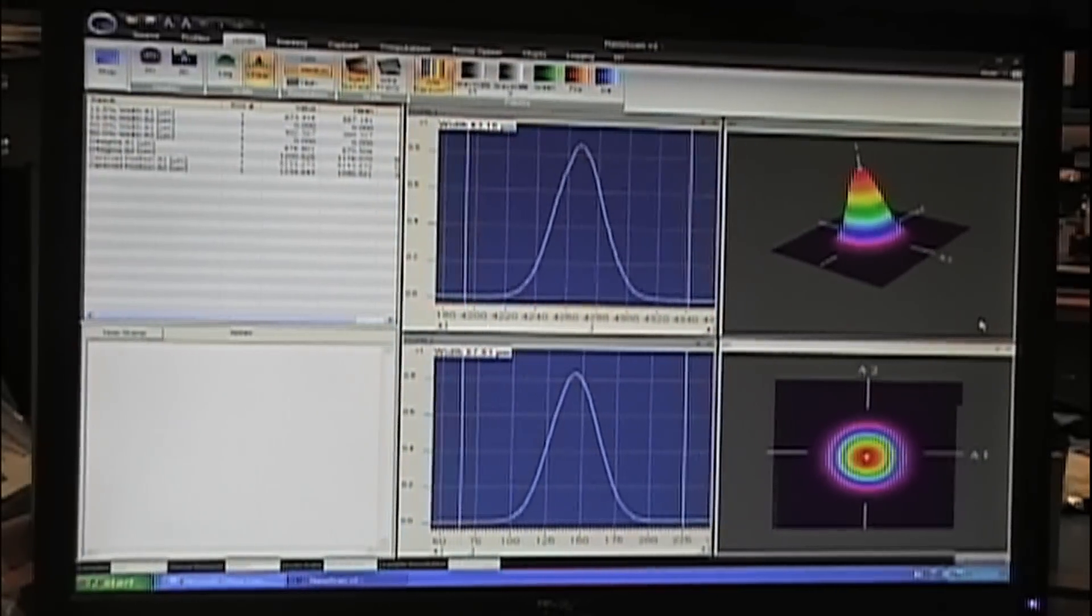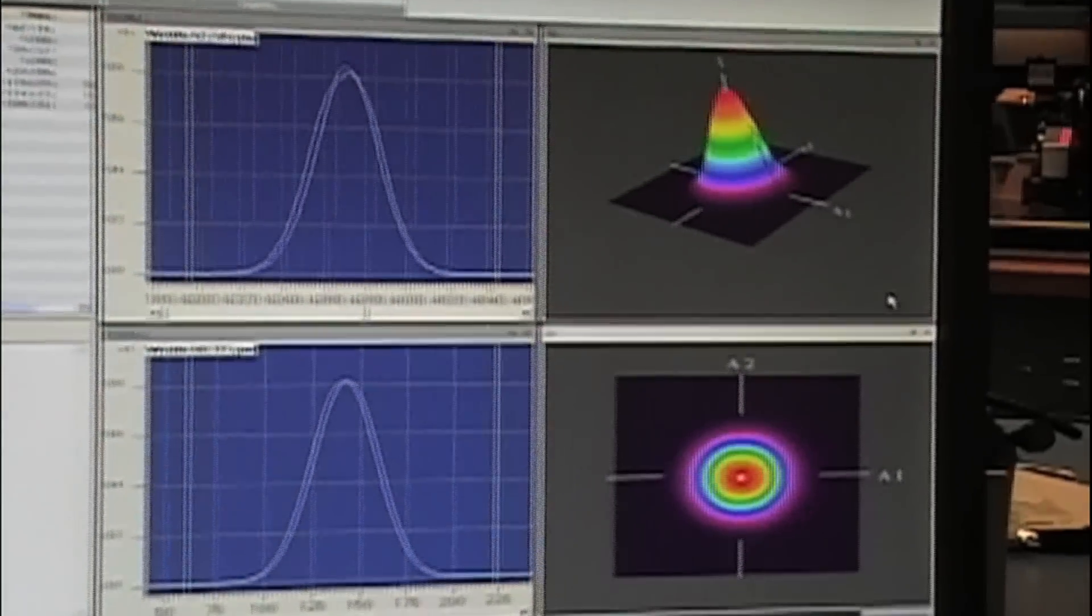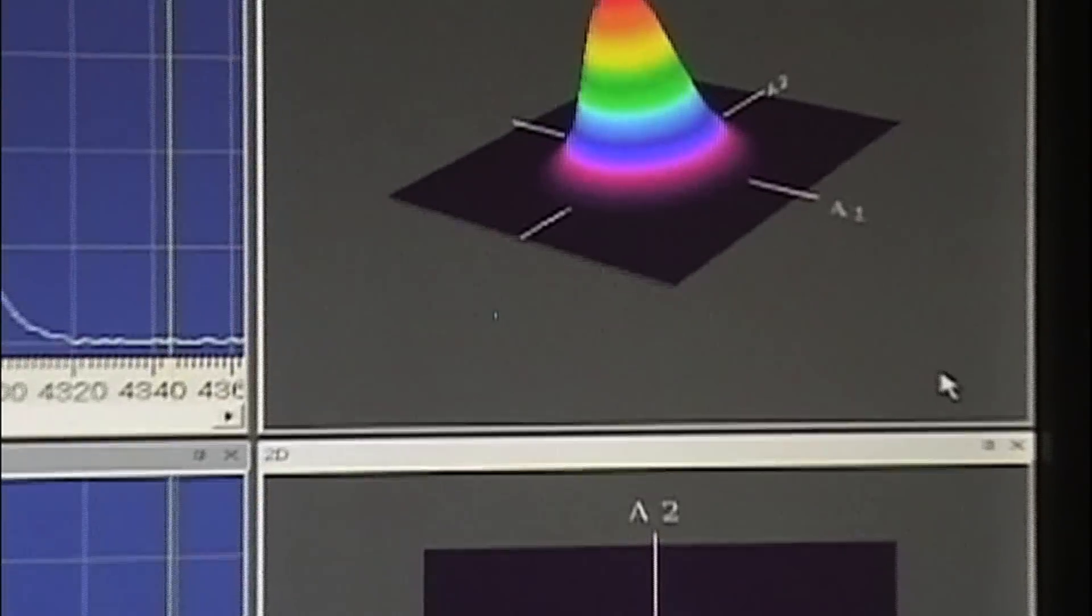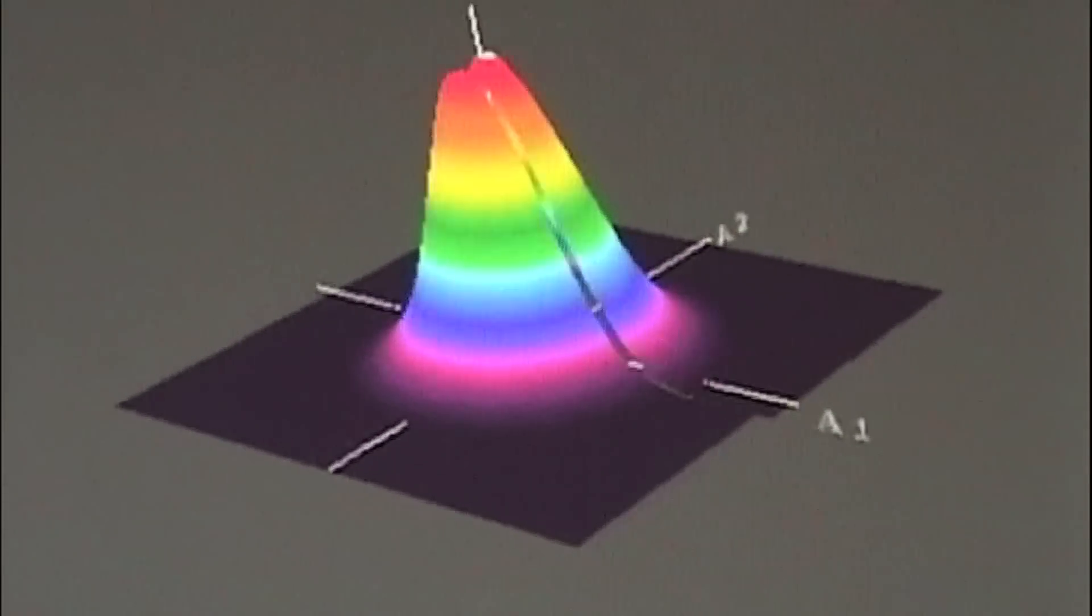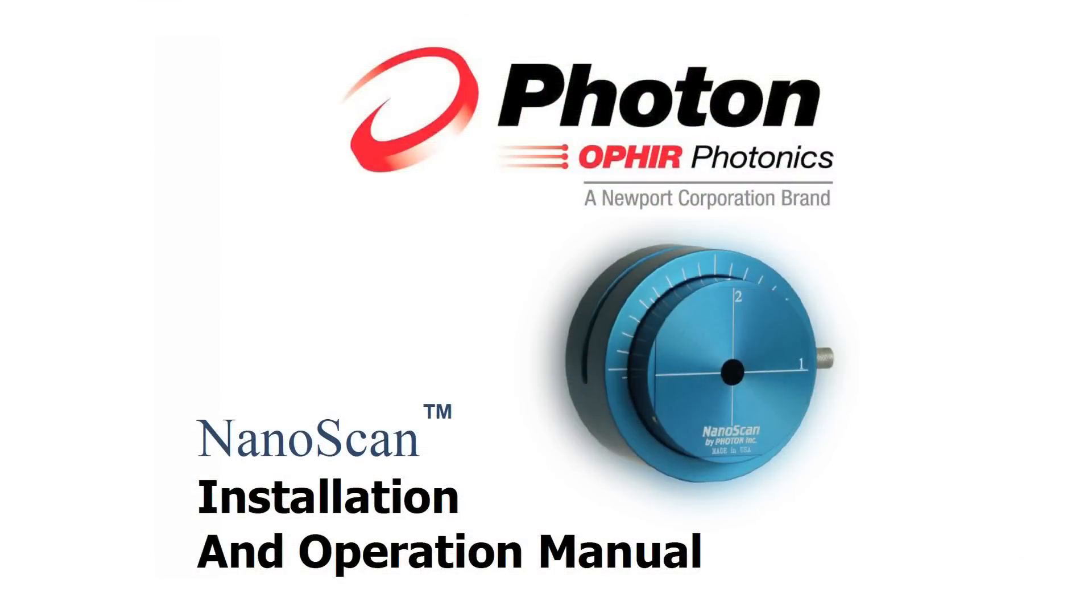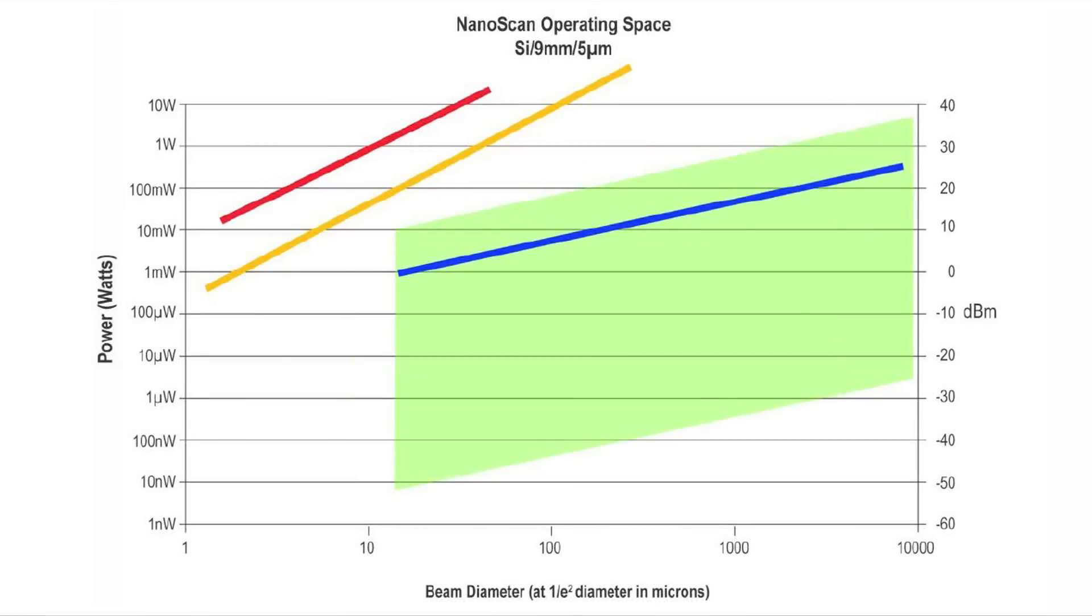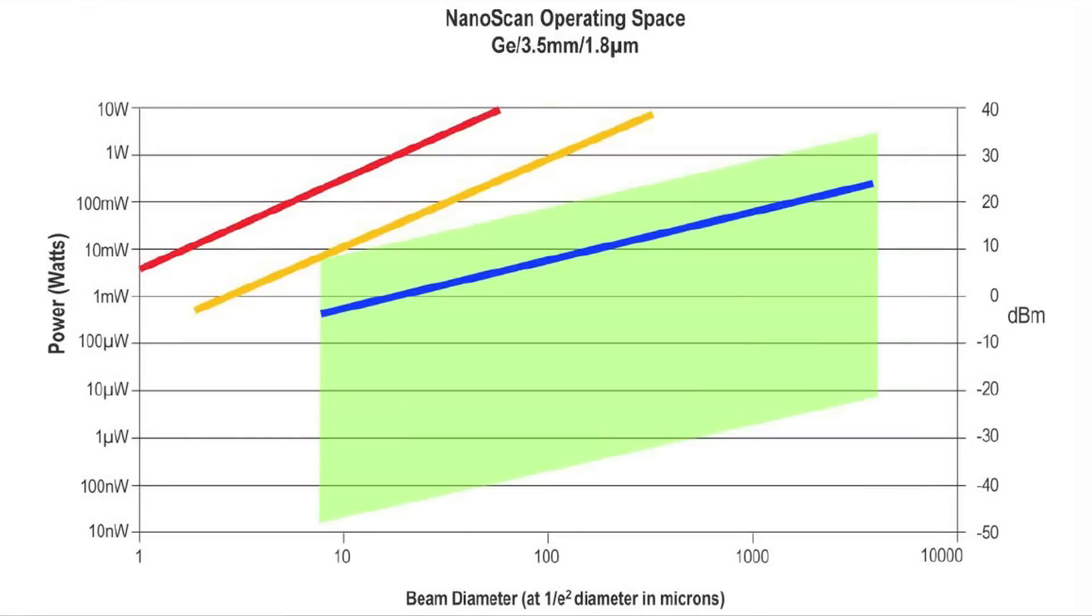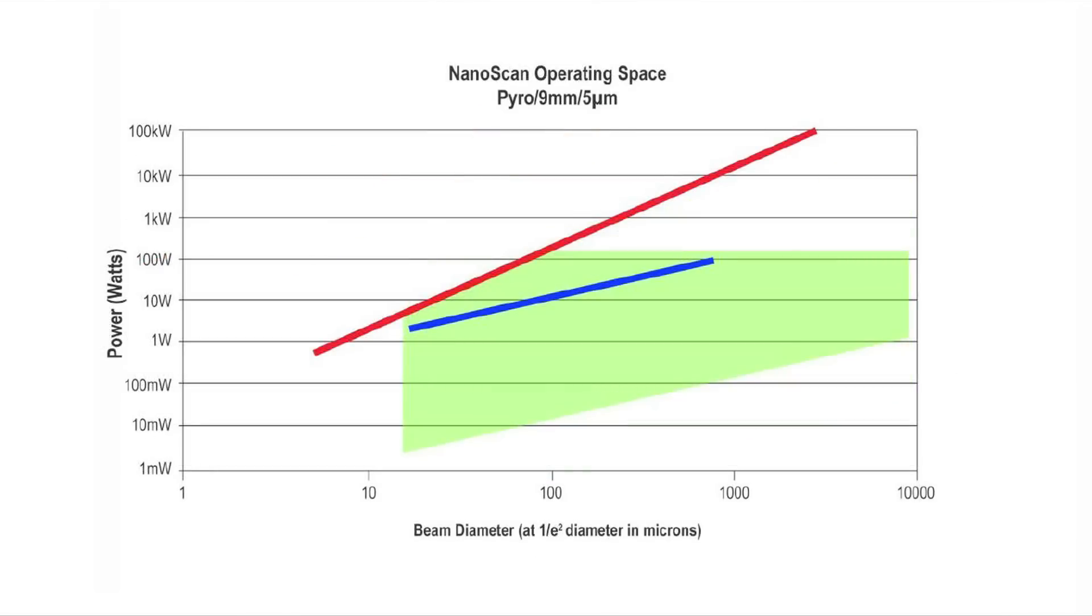The nanoscan measures the beam width very accurately, but some knowledge of the input beam width and power is required in order to safely set up the nanoscan for beam width measurement. The nanoscan installation and operation manual includes operating space charts for all nanoscan types. These charts indicate the power and beam size ranges for safe operation.